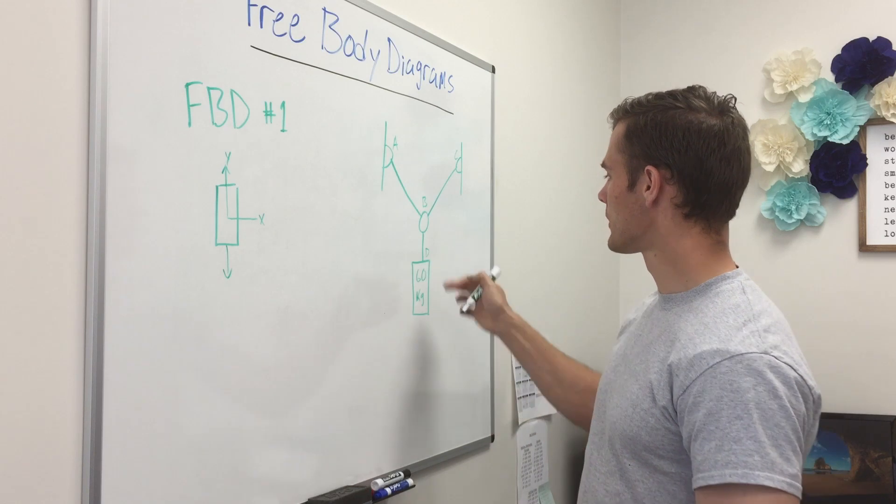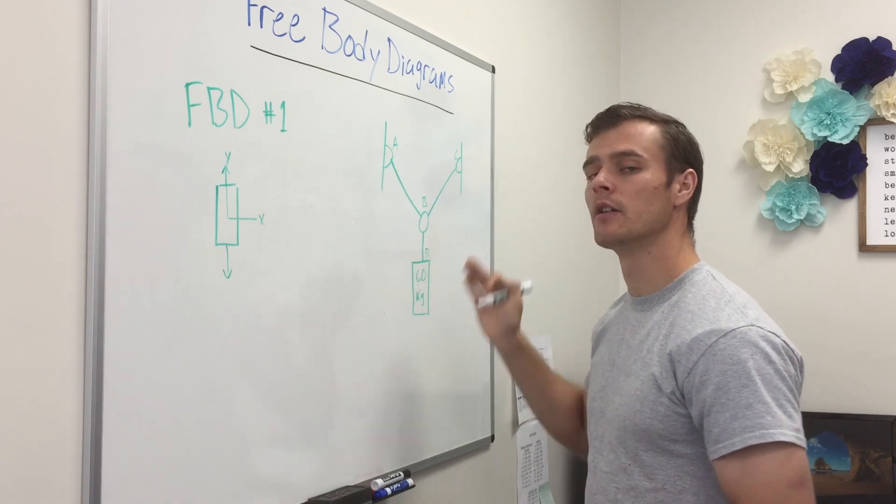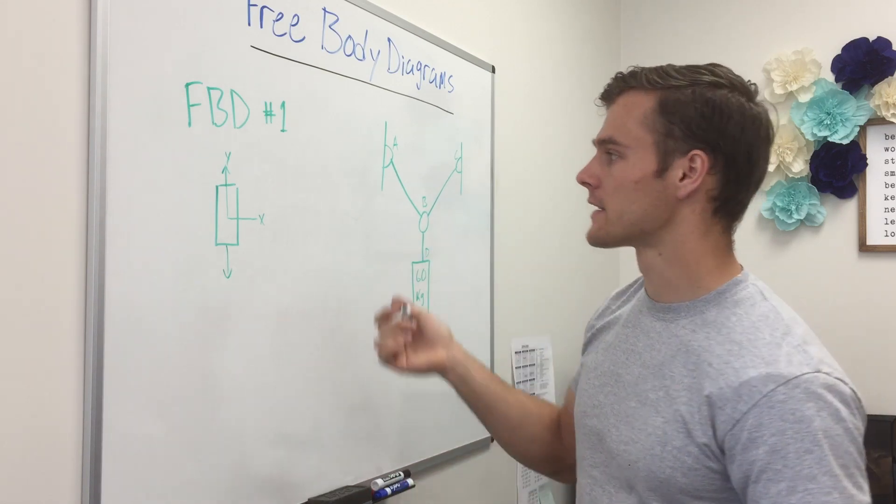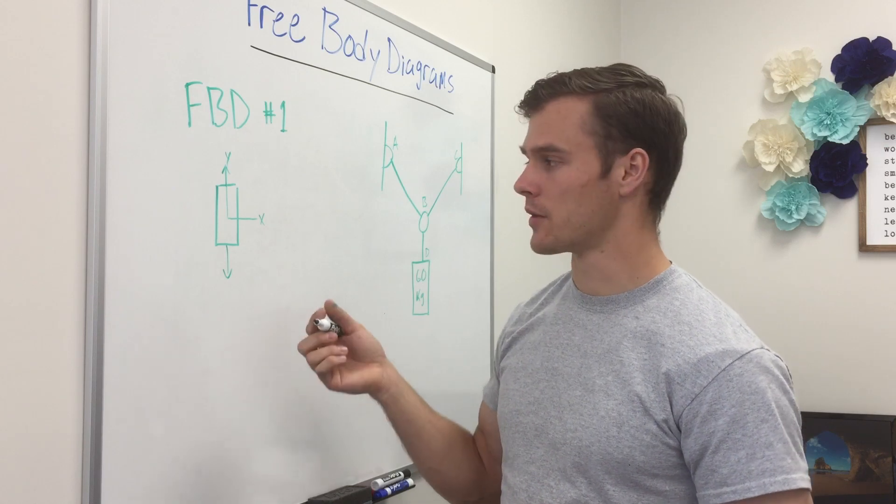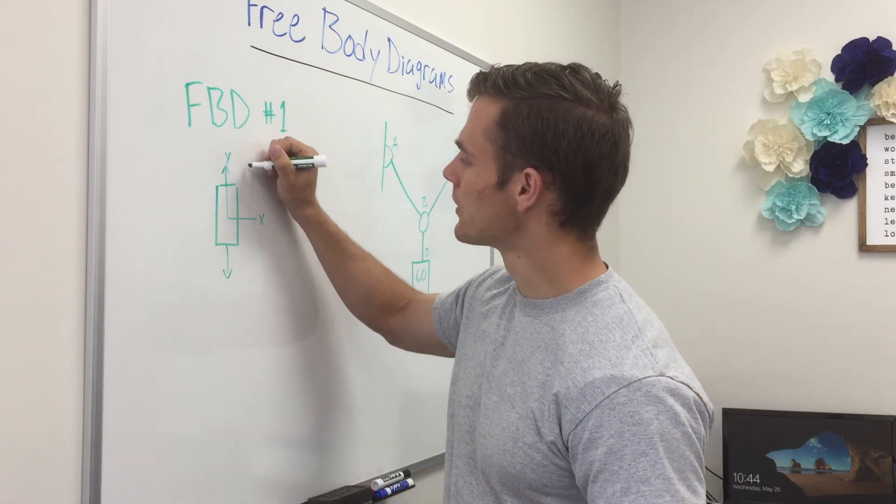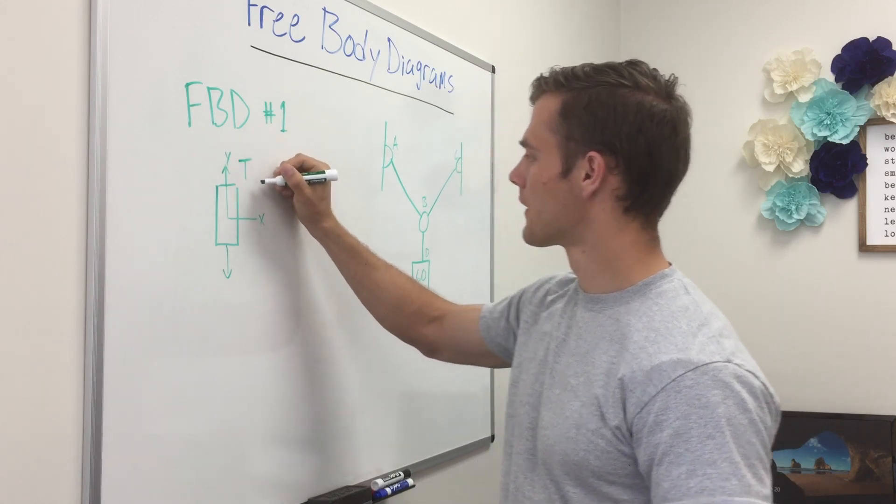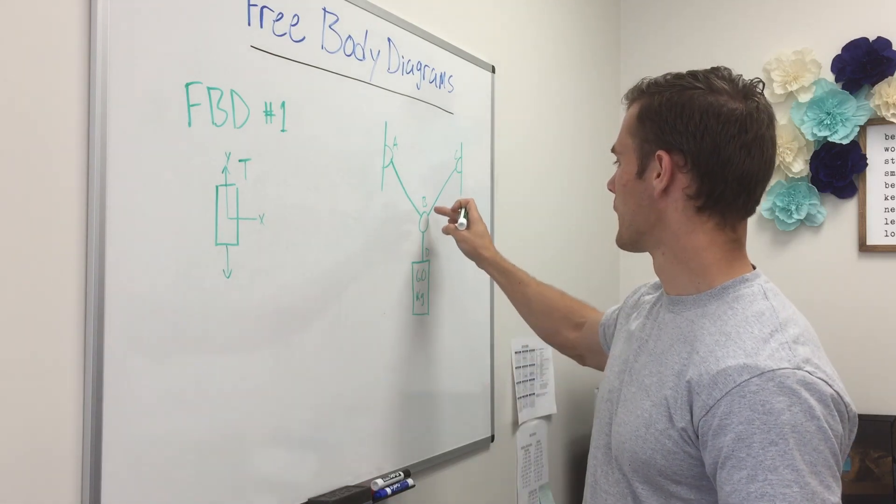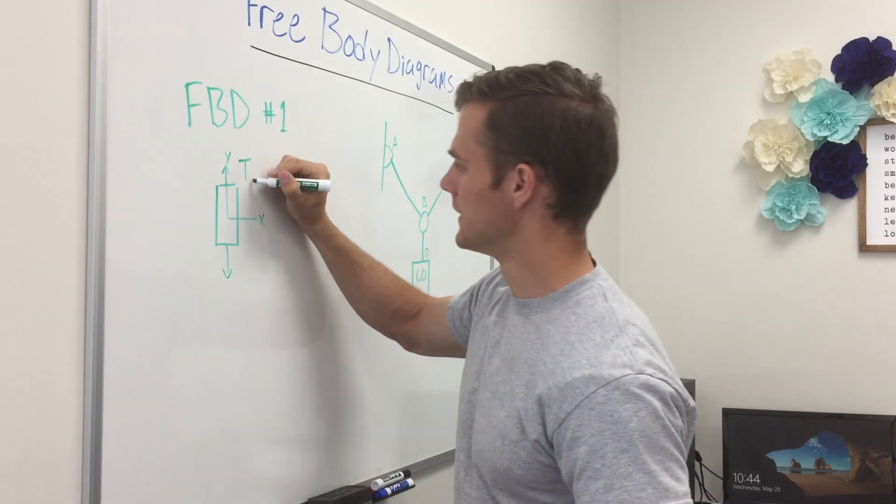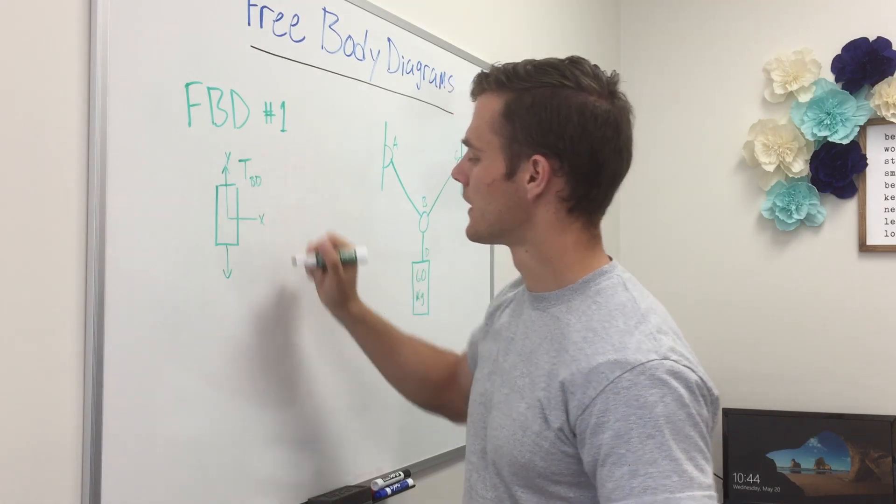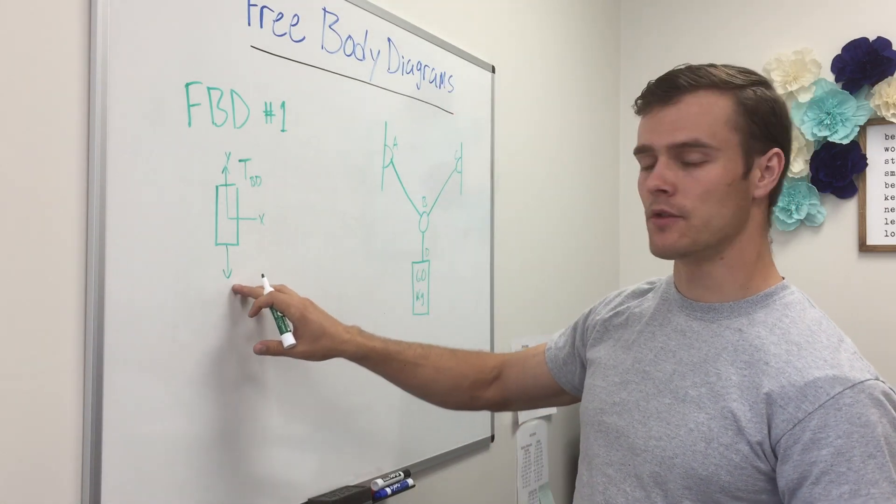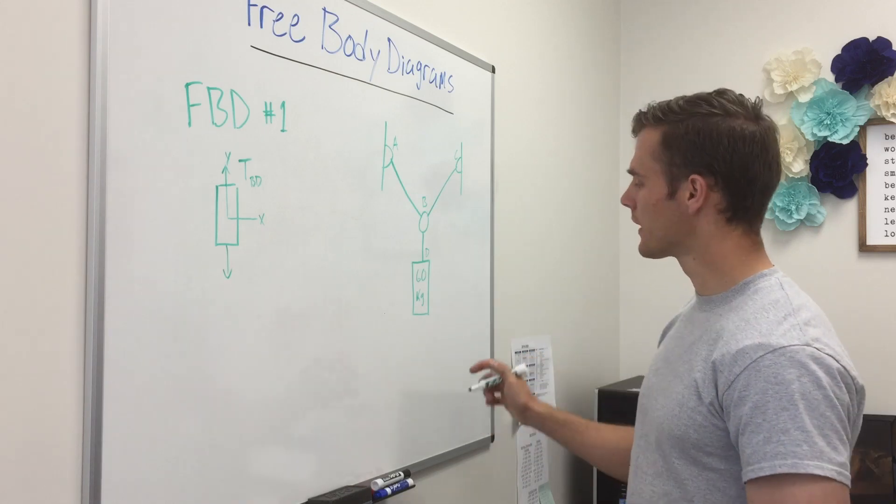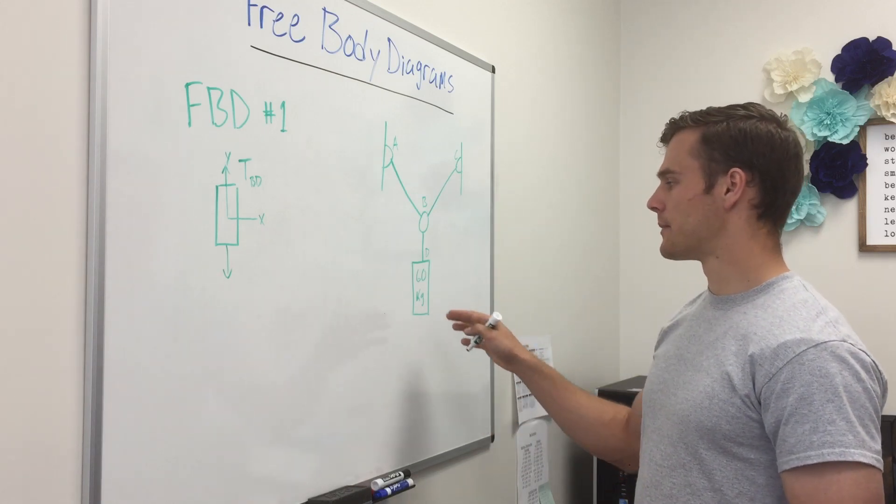And so we don't really know the tension in the rope yet, we could solve for it but that's not what the purpose of the free body diagram is. So we will label that tension t in the rope going from B to D, so we'll call it T_BD. And then the force of gravity depends on our weight.